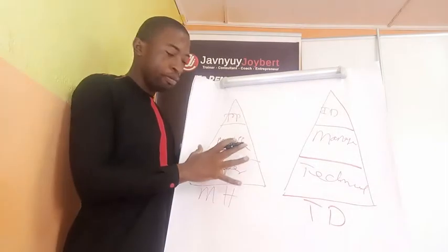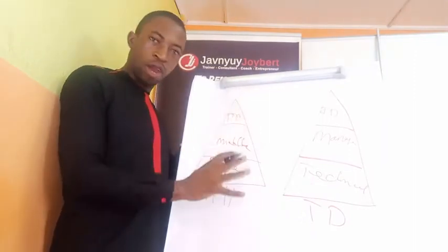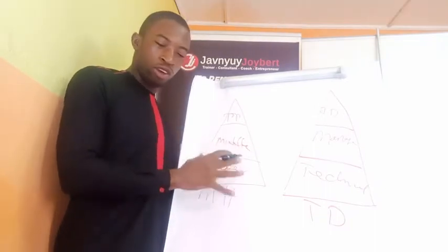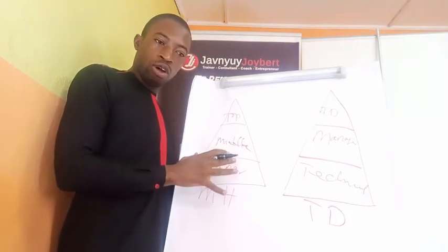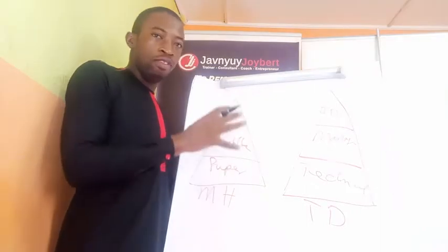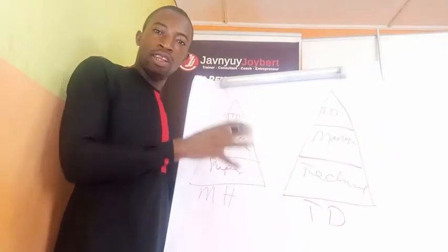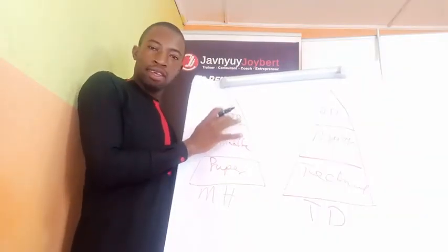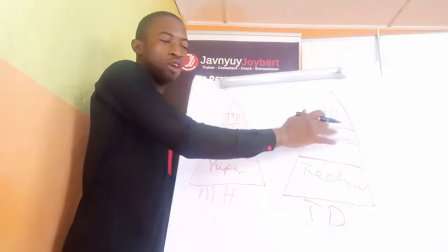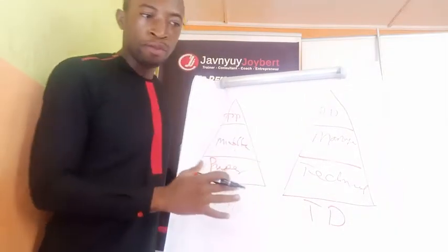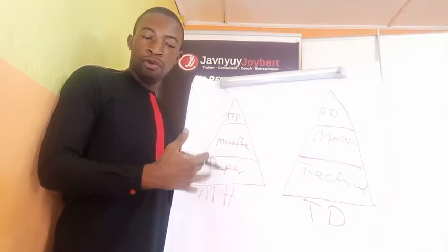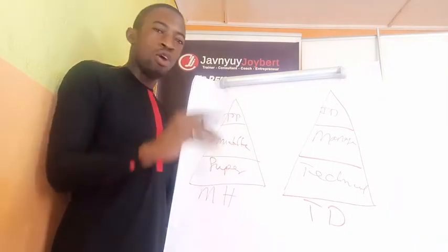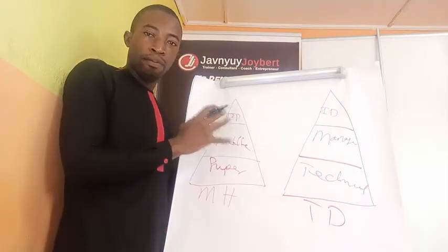There is a relationship between management hierarchy and types of decisions, and it's very, very important that every executive should pay attention to this. Because when you don't really understand the role of everybody in the organization and the kind of decision-making levels where they can contribute, you always mix up. Top management plays a key, important role in making institutional decisions.